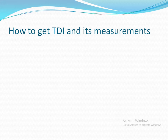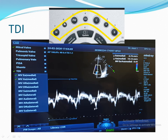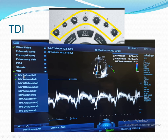How to get Tissue Doppler and its measurements: choose the Tissue Doppler button, then select pulsed wave. You can place the sample volume medially or laterally — here we put it medially. Go to the waveform, press Measure, select the Tissue Doppler image, and you will have Mitral Valve E and E' medially. If you place it laterally, measure from that position to get Mitral Valve E and E' laterally.